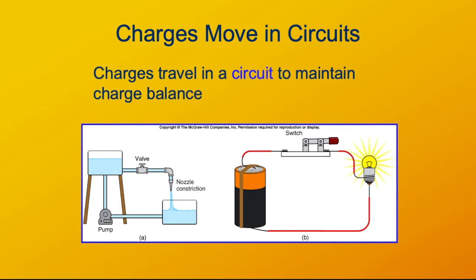This is an analogy to a circuit of water. We've got a pump, which provides energy to increase the potential energy of water, which flows through a valve that can shut the system on or off. It goes through a constriction in the nozzle where the water is slowed down — some resistance to flow — and then it returns, completing the circuit. This system is only going to work if there is a circuit, if the water can be used over and over again.